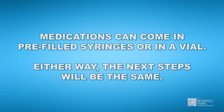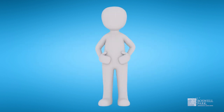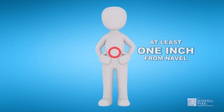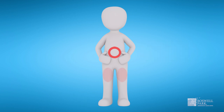Medications can come in pre-filled syringes or a vial. Either way, the next steps will be the same. After you have your equipment ready, pick a location for the injection. Injection sites include your abdomen, at least one inch away from your navel, the front of the thigh, or the upper outer arm.